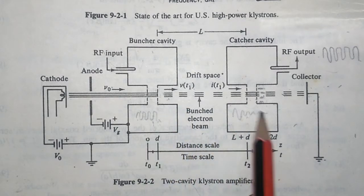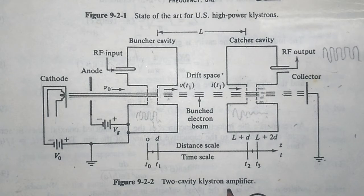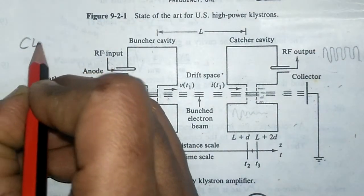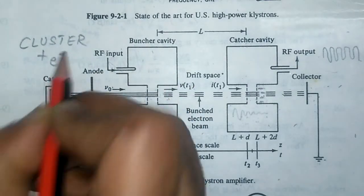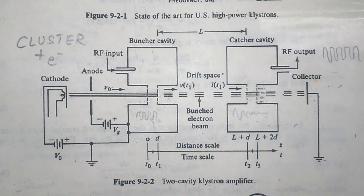What is the cavity? These are the two cavities in a klystron amplifier. The word 'klystron' is coined from two words: cluster plus electrons. Cluster means a bunch. So in a two-cavity klystron, the process responsible for amplification is the formation of electron bunches.